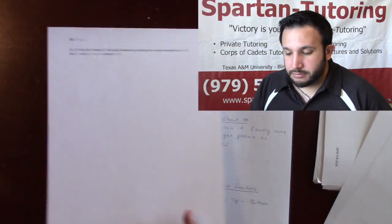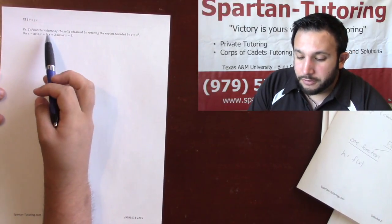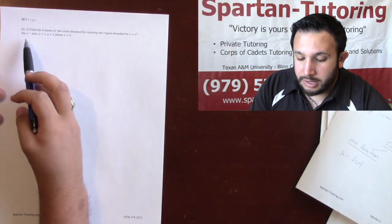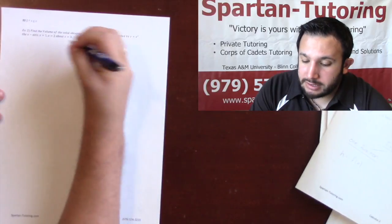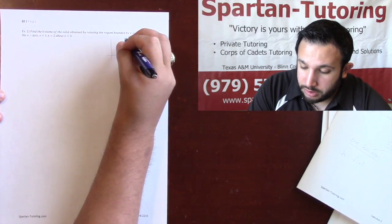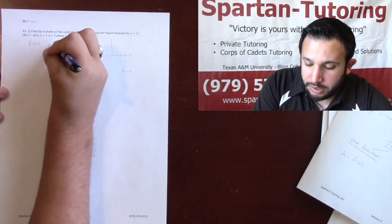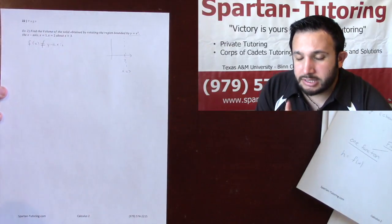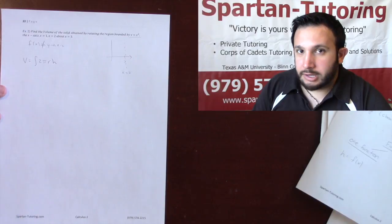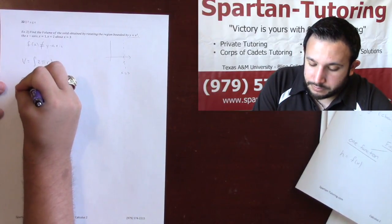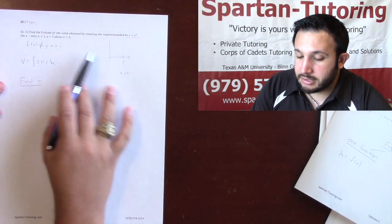For number 2: find the volume of the solid obtained by rotating the region y = x², the x-axis, x = 1, x = 2, about x = 3. Notice I have a function of x, and x = 3 is parallel to the y-axis. So I have a function of x about a y-axis — these don't match — so I'm using cylindrical shells: V = ∫2πrh. I need to find r and h independently. R isn't going to be easy this time because I'm not rotated about an axis — I'm rotated about a number, so let's sketch it out.